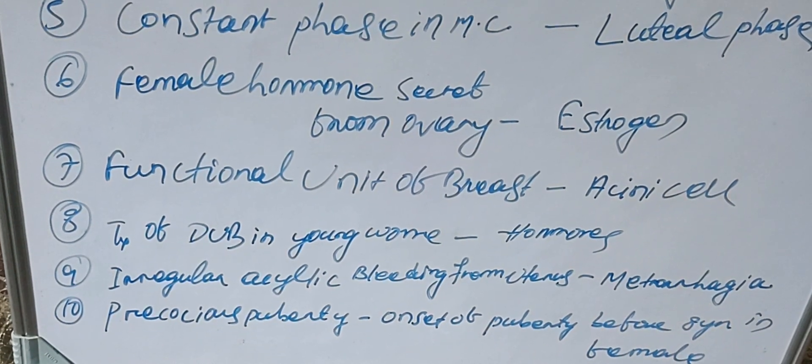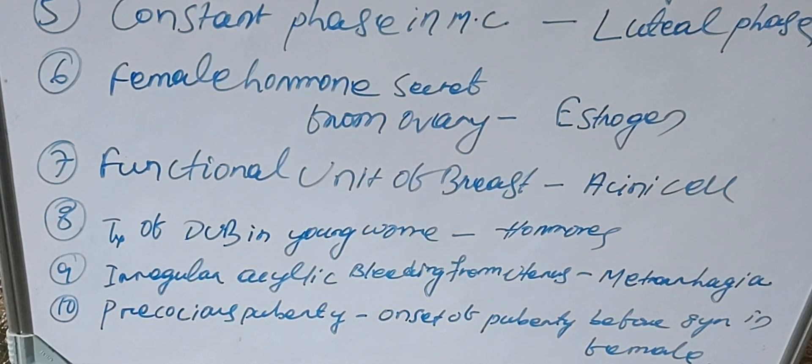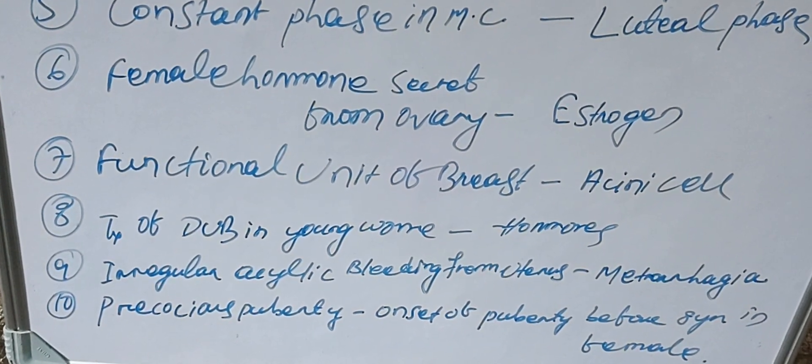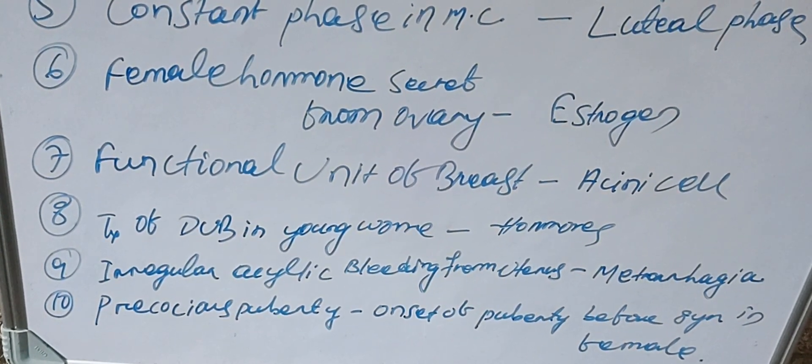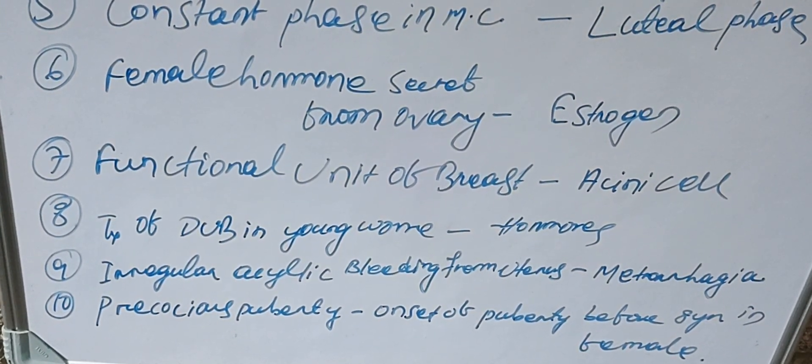Precocious puberty means onset of puberty before the normal age in females. Thank you.